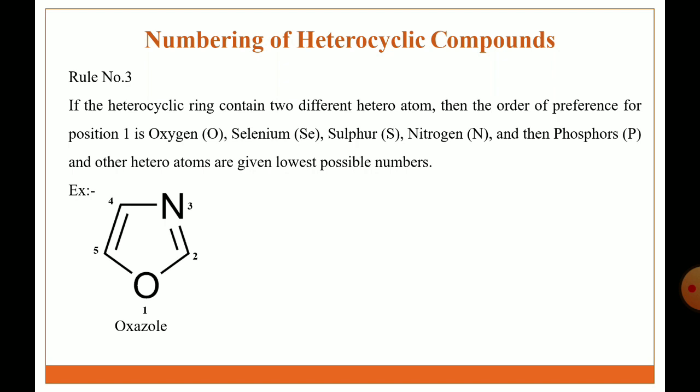The name of this heterocyclic ring is oxazole. Similarly, the next example is a five-member heterocyclic ring containing sulfur and nitrogen — two different heteroatoms. Name of ring is thiazole. The first number is given to sulfur and the lowest possible number is given to the next heteroatom, that is number three, given to nitrogen.